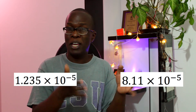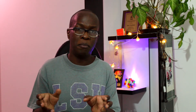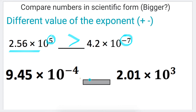If the two exponents of 10 are exactly the same, then the only thing you need to do is compare the decimal part of the scientific number. In the first example, we want to compare two scientific numbers with different exponent values: 2.56 times 10 to the power of 5, compared with 4.2 times 10 to the power of negative 7. Since one exponent is positive and the other is negative, positive exponents are always bigger than negative exponents. That means 2.56 times 10 to the power of 5 is bigger than 4.2 times 10 to the power of negative 7.